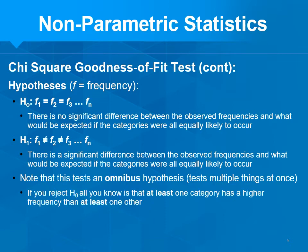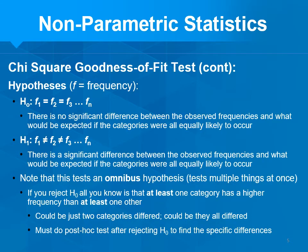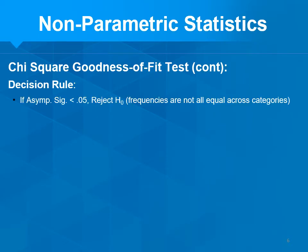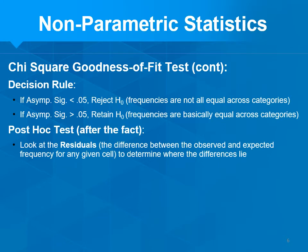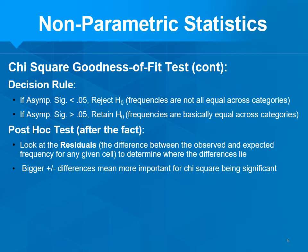When you reject the null, all you know is that at least one category has a higher frequency than at least one other — but it could be more. So you do a post-hoc test to find the specific differences. Your decision rule: if asymptotic sig is less than 0.05, reject the null — the frequencies are not all equal. If asymptotic sig is greater than 0.05, retain the null — the frequencies are basically equal. The post-hoc test is to look at the residuals: the difference between observed and expected frequencies for a given category. Bigger residuals, positive or negative, indicate where the larger differences are.